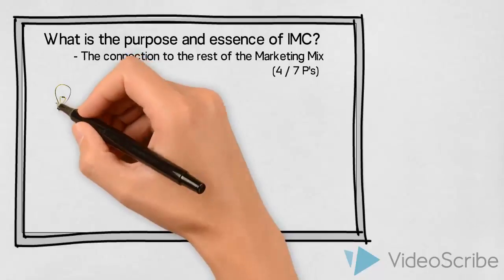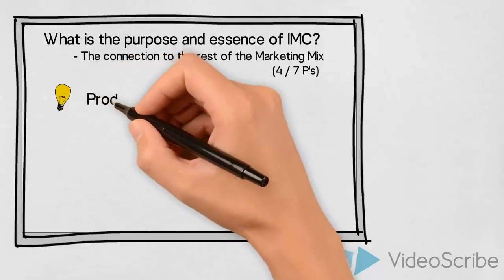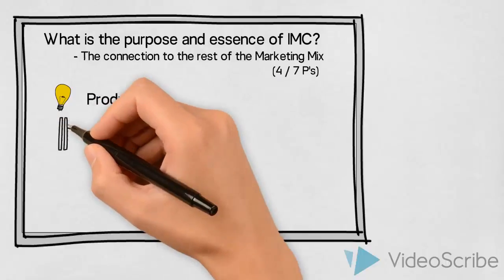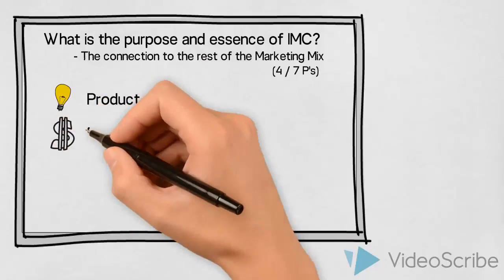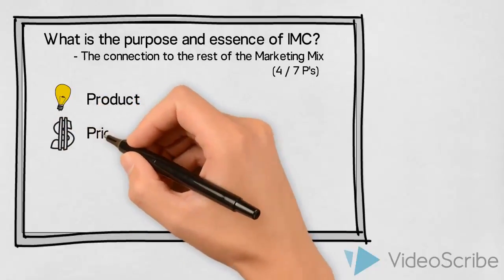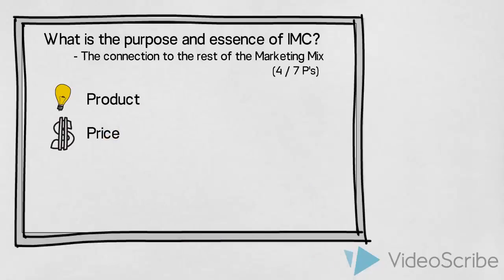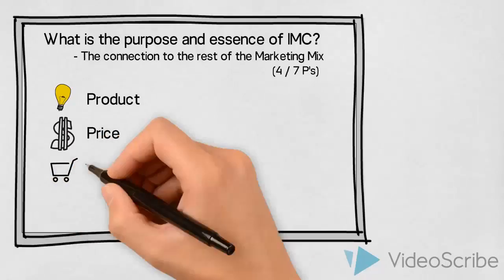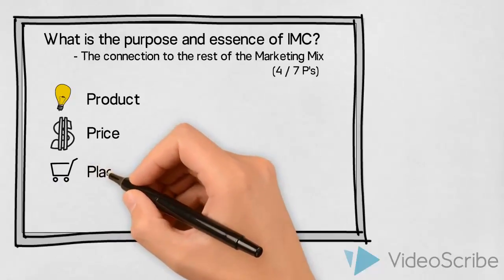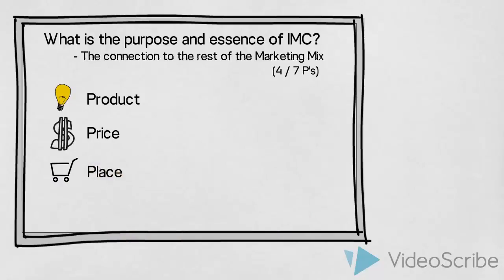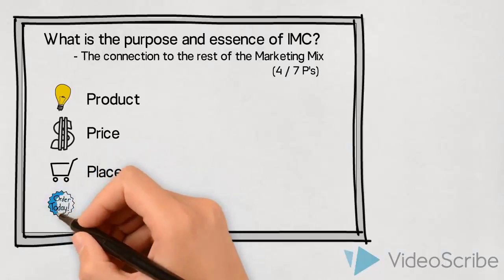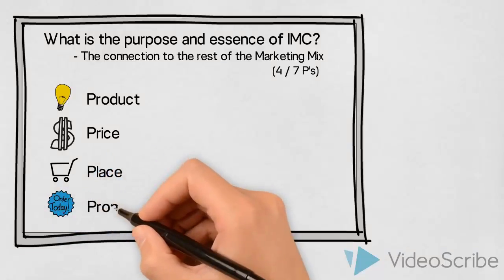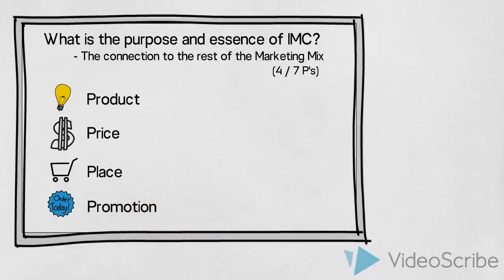First of all, any issues concerning the product — this would include packaging and all other elements in connection with the product. Secondly, a decision on price. Thirdly, you will need to decide on the choice of place: through which channels will you distribute the product or service? We also need to make a plan of which promotional activities we will carry out, and this is where we talk about using integrated marketing campaigns.